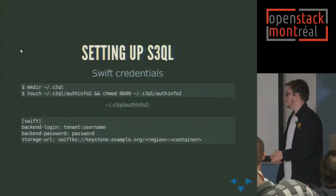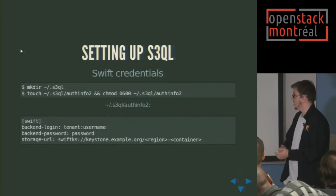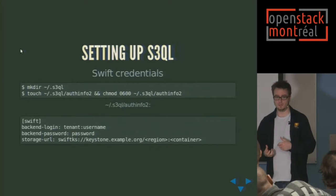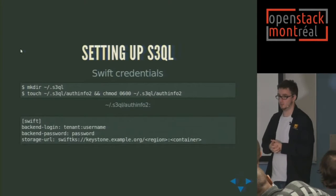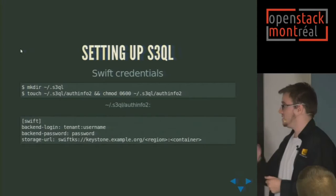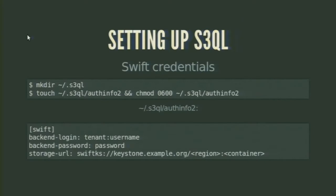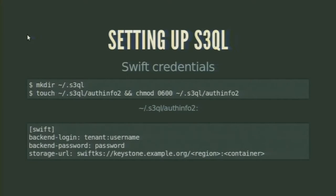Setting up S3QL — just like Duplicity, you need to provide your Swift credentials to S3QL. By default, S3QL expects a credentials file located in the home directory of the user, in the ~/.authinfo2 file. The format is: tenant, username, password. In this case, Swift is backed by a Keystone authentication service, so it uses the Swift Keystone backend, and then you provide the Keystone hostname, the region, and the container you want your filesystem to be in.